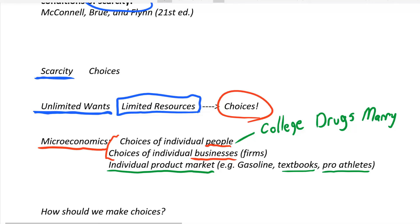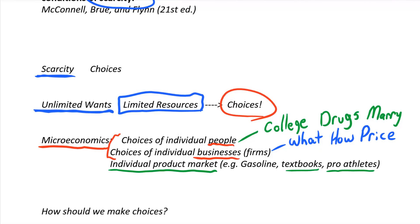We also look at the choices of business firms. For example, what kind of product does a business want to produce? How does it produce it — does it use a lot of machines or a lot of people? What price does a firm charge for its product, and how is that price determined depending on how many competitors the business has? What quantity of output does this businessman or businesswoman want to produce? These are all important choices for businesses, and just some of the many topics that microeconomists study.